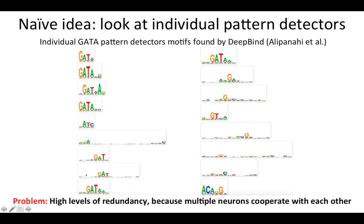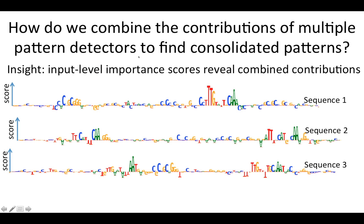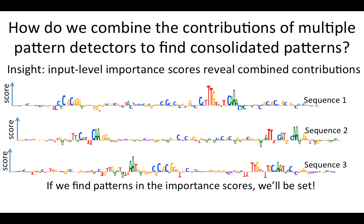So the challenge is, how do we combine the contributions of multiple pattern detectors to find consolidated patterns? The insight that we had is that if you look at input-level importance scores — such as those produced by looking at the gradients, or maybe DeepLIFT — these scores represent the contributions of particular positions to the entire network when it works as a whole, because these scores are computed via back propagation through all the neurons in the network. What that means is, if we find patterns in these importance scores, these patterns will represent what the network responds to when it works as a whole.